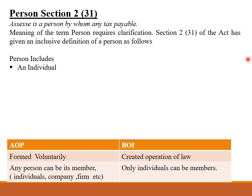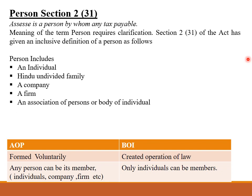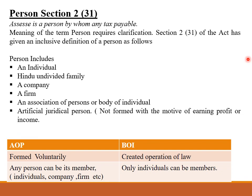Person includes: an Individual, a Hindu Undivided Family, a Company, a Firm, an Association of Persons or Body of Individuals, an Artificial Juridical Person which is not formed with a motive of profit earning or income, and a Local Authority. All these things are included under the definition of person.